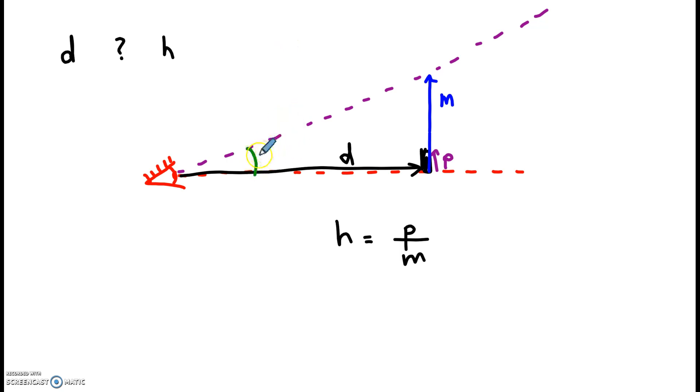Instead of using an x for the angle, we're going to use the Greek letter theta, which is an o with a line through it. And this is what we do a lot of the time in math and physics.